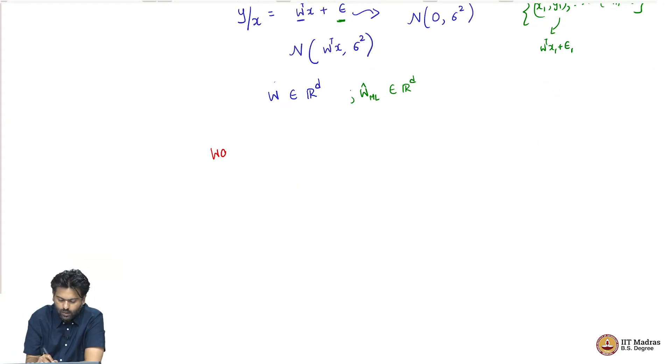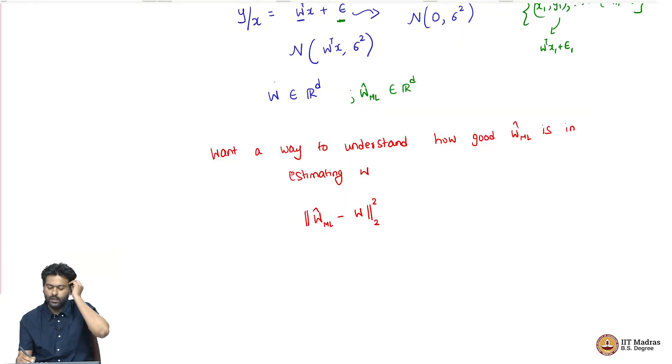So one way to capture this is by looking at the following quantity. We want a way to understand the goodness of W hat ML, how good W hat ML is in estimating W. So one way to understand this is to look at W hat ML minus W, and because these are d dimensional vectors, you can look at their norm squared, the Euclidean norm, the distance between these two vectors. But now again, because we cannot just look at one sample, one data set and decide this, we want to understand this on an average how does this happen, which means we need to look at the expected value of this quantity.